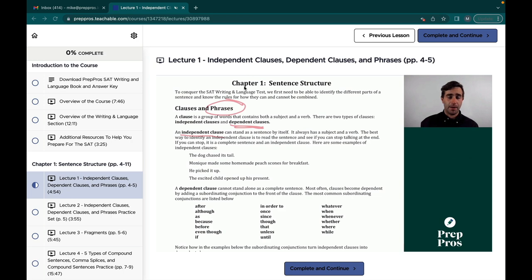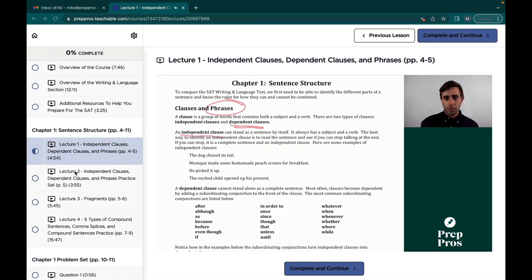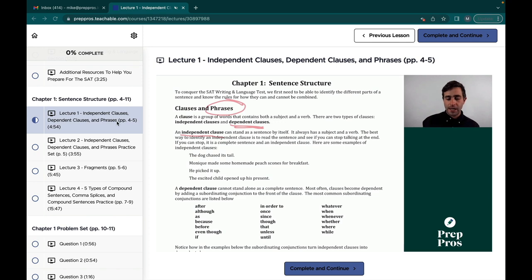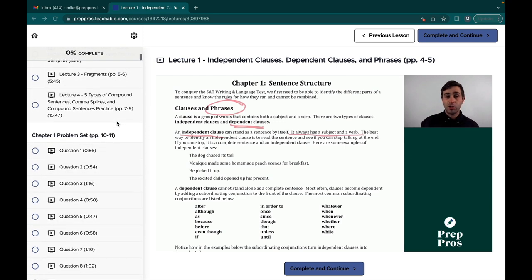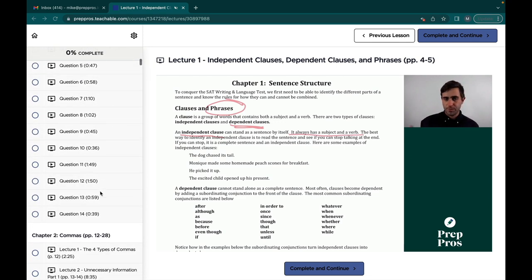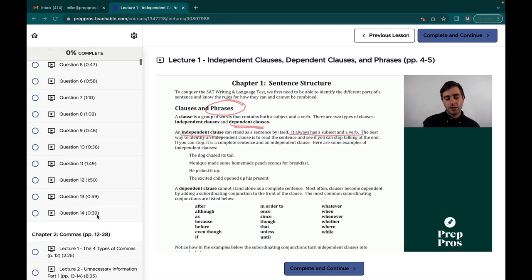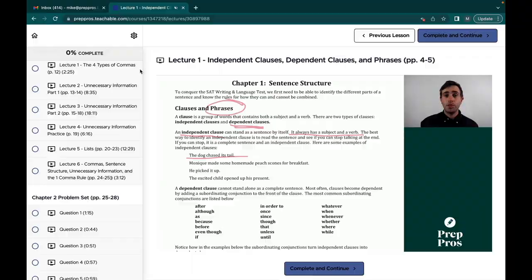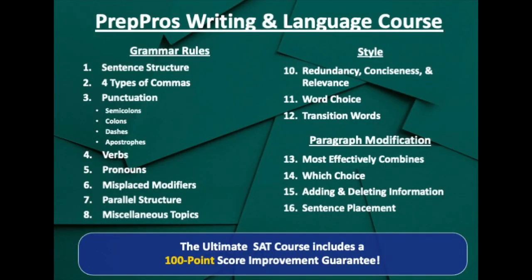If you're looking for detailed lessons to help you improve on the writing and language section, there's no better resource than my ultimate SAT course. And in the free trial, you can learn all of your sentence structure rules, get access to a full problem set with detailed explanations to all the questions and learn some of your most important comma rules. But if you're really looking to get a great score in the writing and language section, you need to master all of the grammar skills and all of the strategies. And that's why I have 16 chapters and over 500 practice questions that will teach you everything you need to know to get a perfect score.